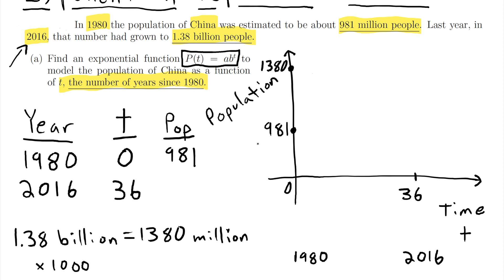So what's happening is that the population of China is going up and it's going up exponentially. So it's not like a line. It's a curve where it gets steeper. And so the first part of this problem is we need to find this equation and that equation is going to be in exponential form.